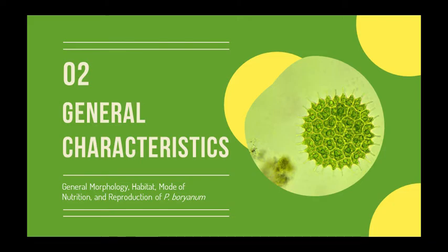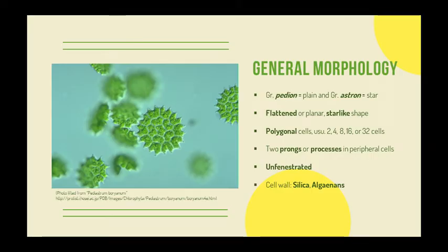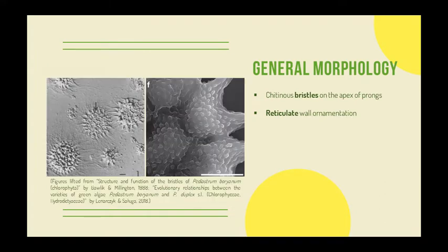Let's proceed to the general characteristics of P. boryanum. P. boryanum came from the Greek words pideon and astron, meaning planar star. P. boryanum is a very distinctive microscopic coenobial colony having a flattened star-like shape; the colony is one cell in thickness. P. boryanum usually has 2 to 32 cells and rarely exceeds 64, but may reach up to 128 cells. The cells are polygonal and adhered edge-to-edge. Peripheral cells possess two prongs whereas internal cells do not. The internal cells also have a different shape, being less lobed. P. boryanum is an unfenestrated species, meaning no perforations or spaces between the internal cells. The cell walls contain silica and alginans, which are hydrocarbons that help resist microbial decay and chemical hydrolysis. Chitinous bristles, which confer buoyancy, are found at the apex of the prongs in mature colonies of P. boryanum.